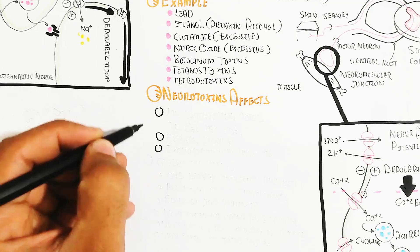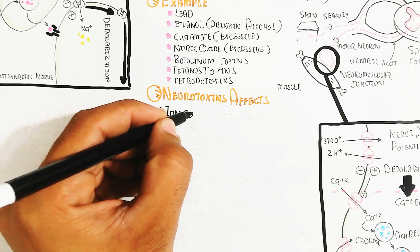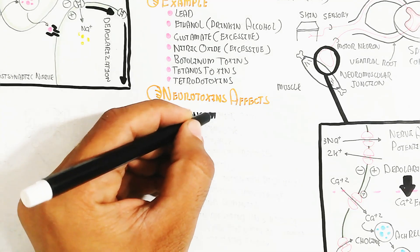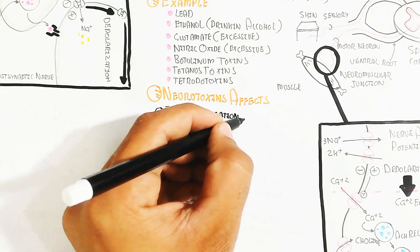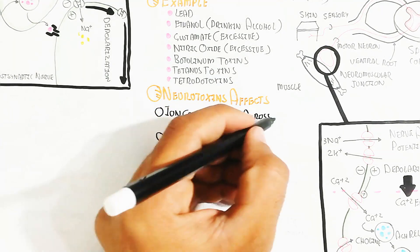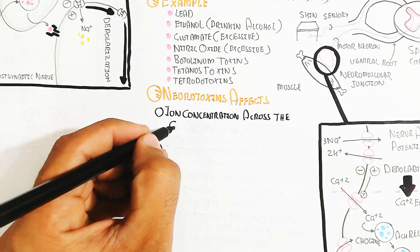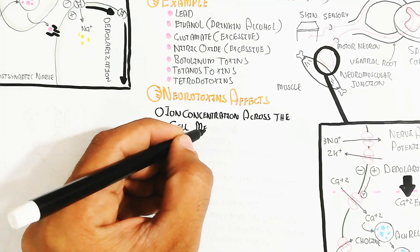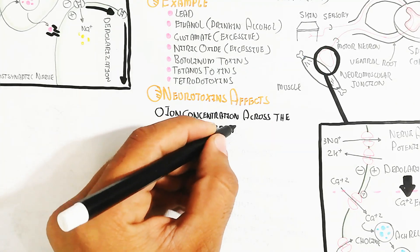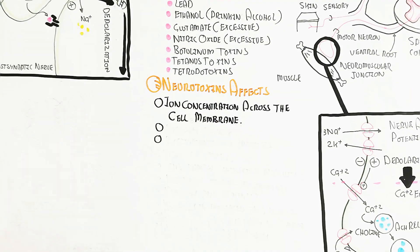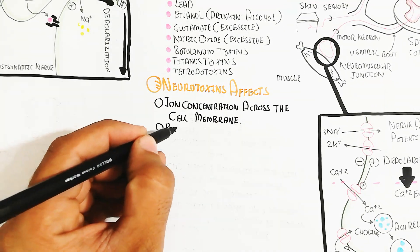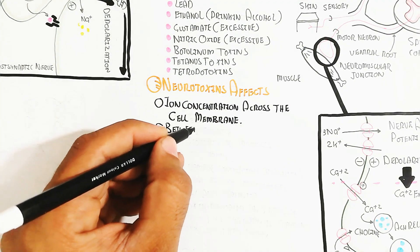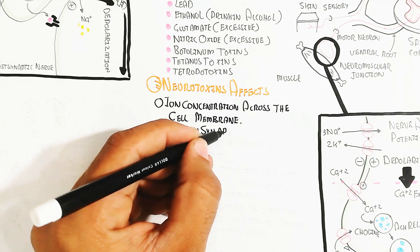Normally, neurotoxin effects disrupt ion distribution across the cell membrane and between synapses. Excitotoxicity or apoptosis of the neuron can occur, leading to neuronal damage — meaning the whole nervous system can be damaged.